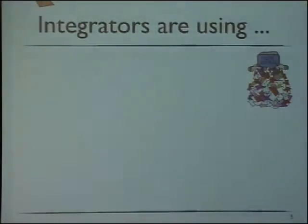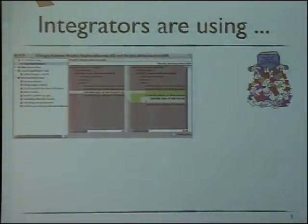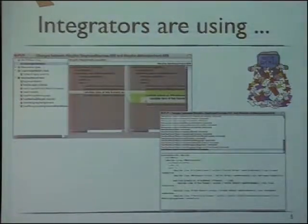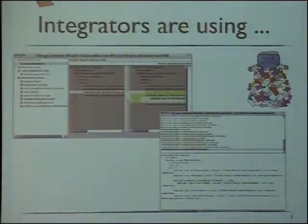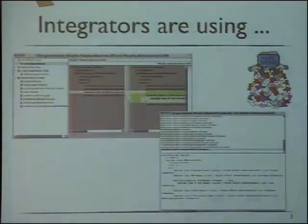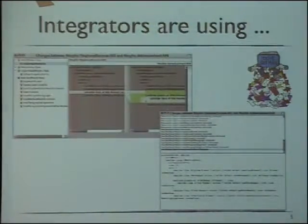Currently, integrators receive a bunch of emails with information from developers, some containing just code with changes, so they have a lot to read. In Faro in particular, they have the Monticello change list. Others prefer to use the plain change list. Depending on the change, that list could be huge, and they just have classes with their changes and the code. This is not bad — it's pretty good — but we can improve the support for them.